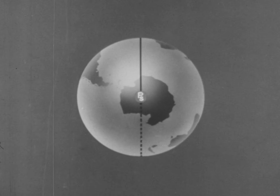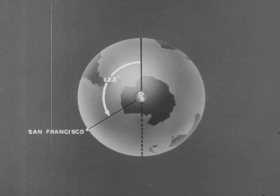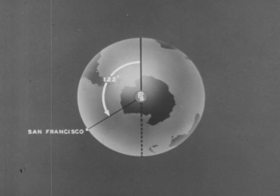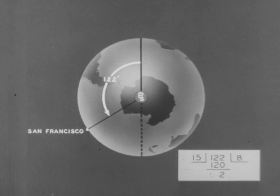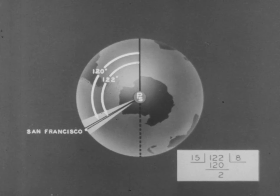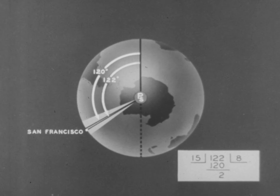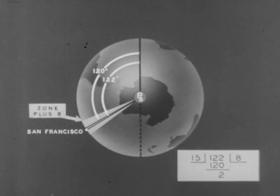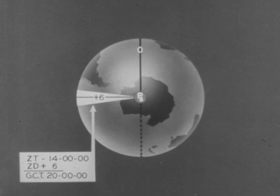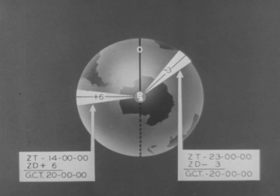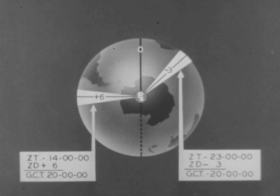For example, the longitude of San Francisco is about 122 degrees west. 122 divided by 15 gives us eight with two degrees left over. This remainder is less than seven and one-half degrees from the 120th meridian, and therefore San Francisco is in zone plus eight. To obtain Greenwich civil time, we have only to add a plus zone description to, or subtract a minus zone description from, the zone time.